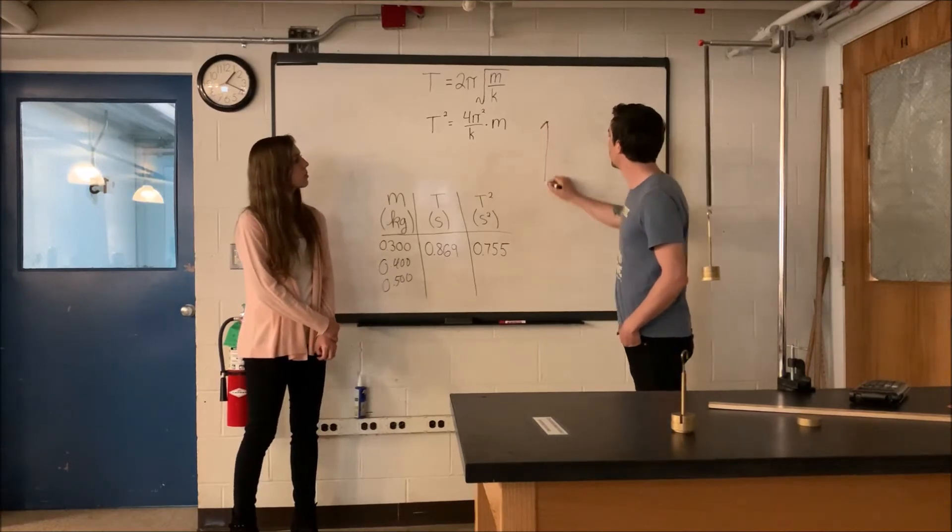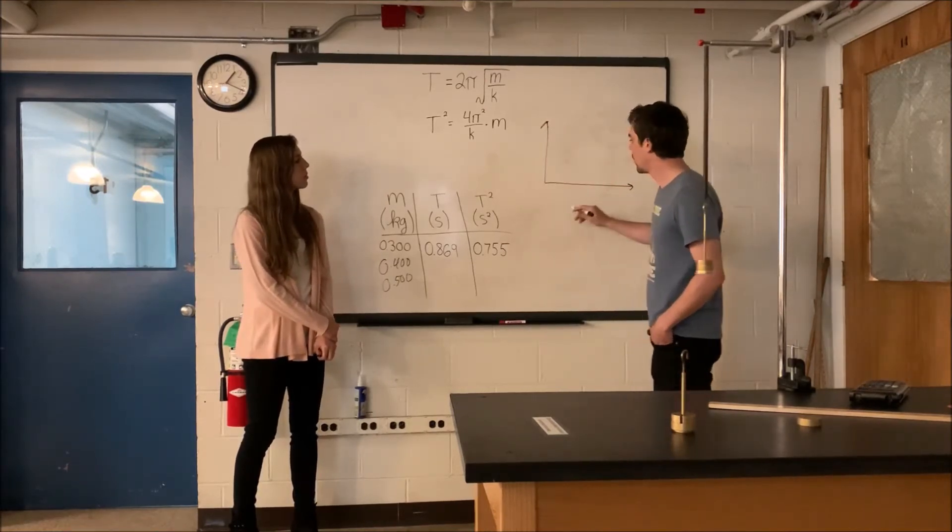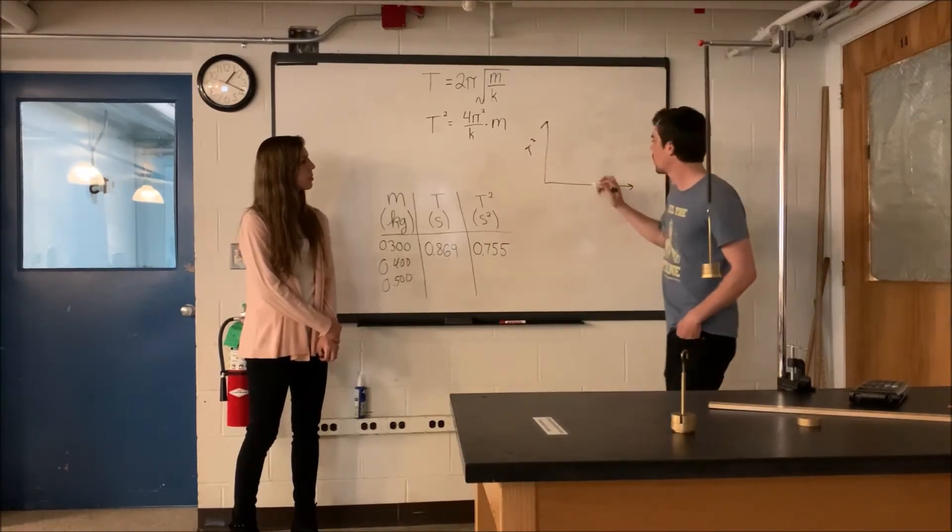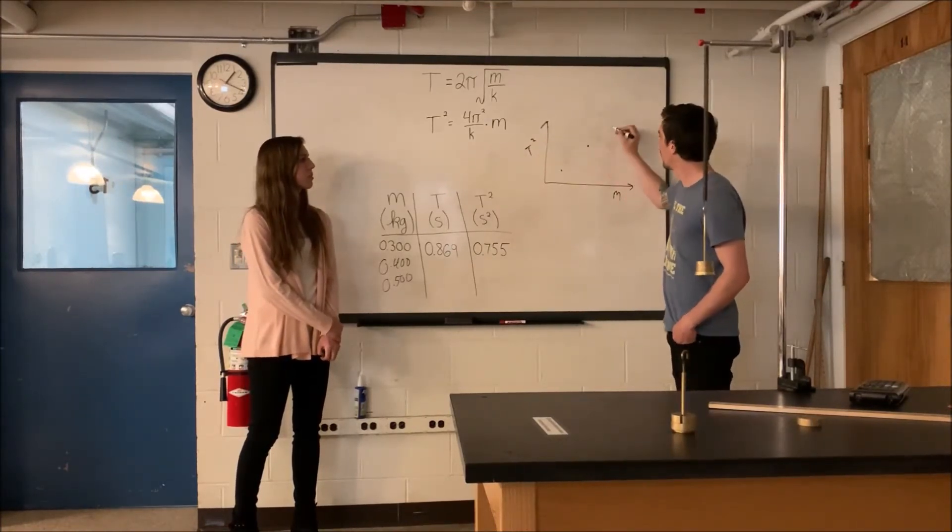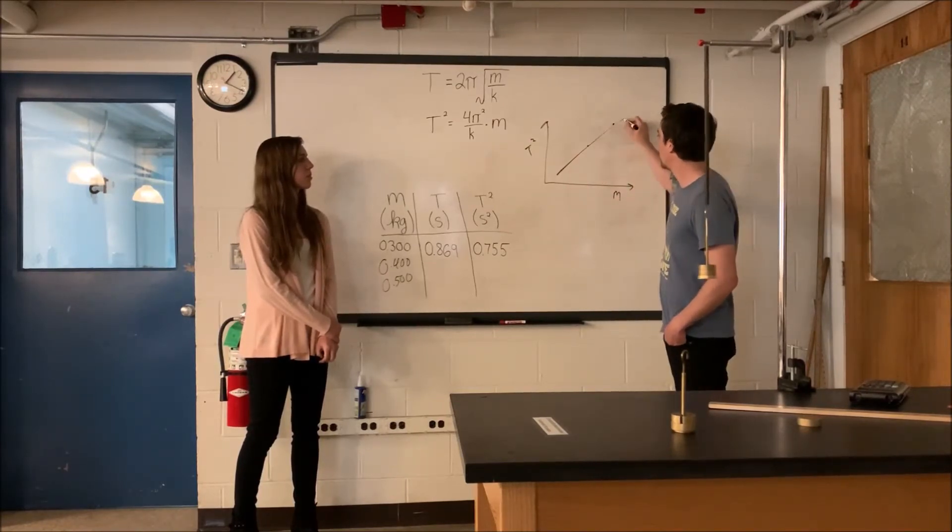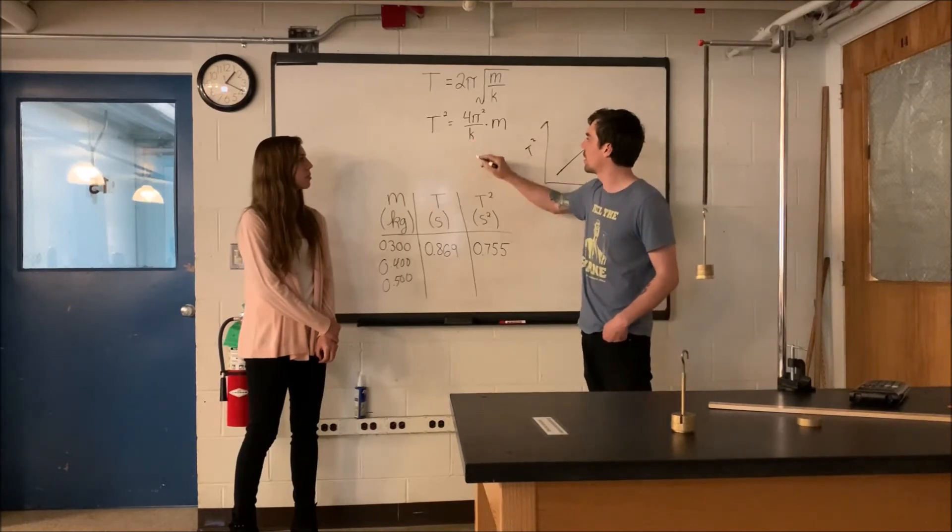What we want you to do is plot m and T². So T² versus m, you're going to have three data points. And like in part one, you're going to fit this with a line. And now your slope is going to be this value right here.